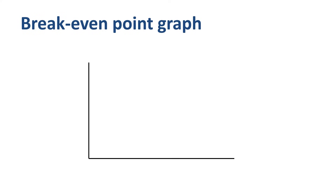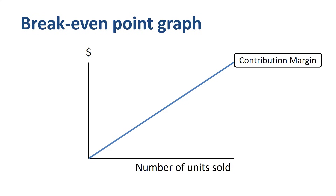Let's look at the break-even point on a graph. On the horizontal axis, the number of units sold; on the vertical axis, the total dollars. Contribution margin dollars go up for every unit sold. Contribution margin is revenue minus variable cost — what you sell the product for minus what it costs you to make an incremental unit.